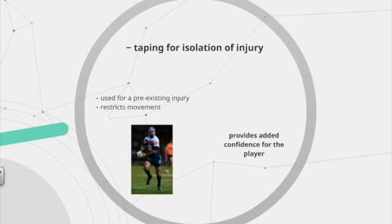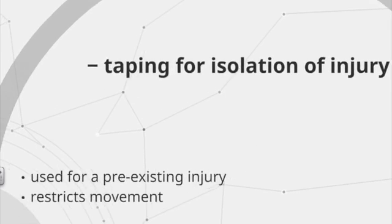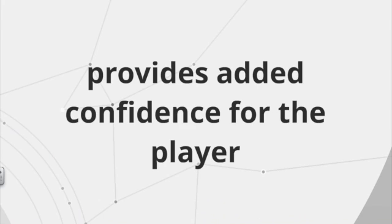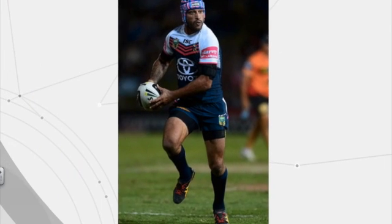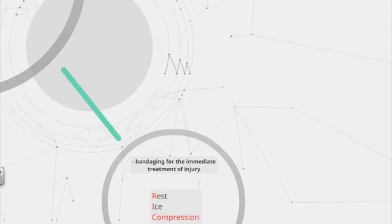The next dot point is taping for the isolation of injury. This is about taping an injured area for a pre-existing injury so the injury doesn't worsen during athletic performance or a game. This method restricts undue movement at the injured area and can also give the athlete added confidence that the injury is supported. For example, Jonathan Thurston tapes his shoulder before each game to restrict movement and prevent dislocation — an injury he has suffered on numerous occasions.